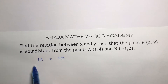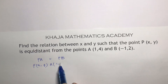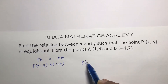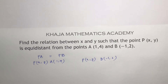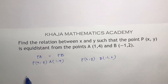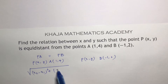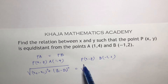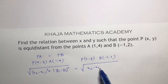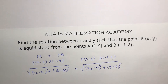If you write the values: P(X, Y), A(1, 4), B(-1, 2). The distance between PA equals PB. The distance formula is: under root of (X2 minus X1) whole square plus (Y2 minus Y1) whole square, equals under root of (X2 minus X1) whole square plus (Y2 minus Y1) whole square.